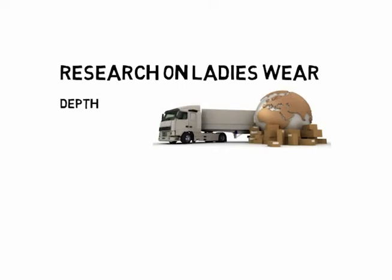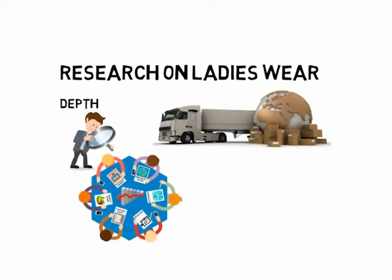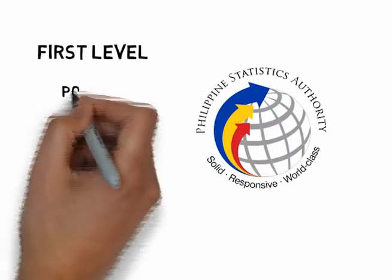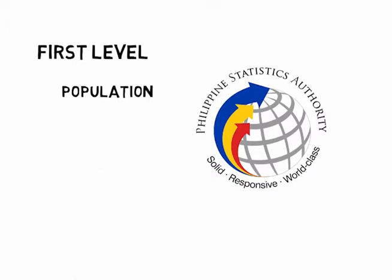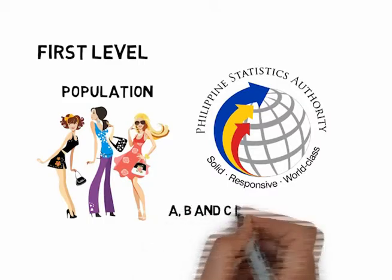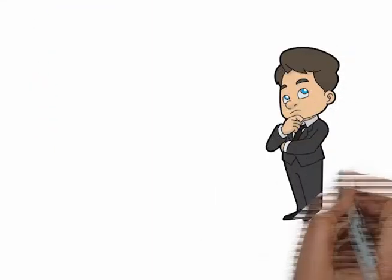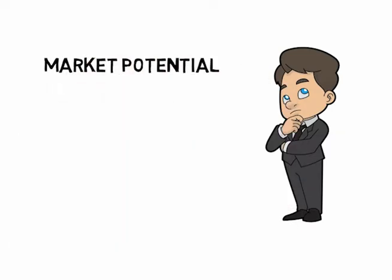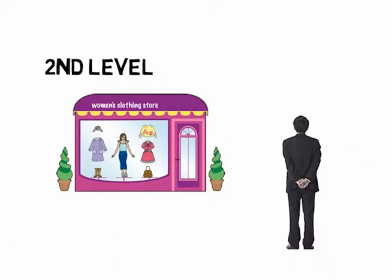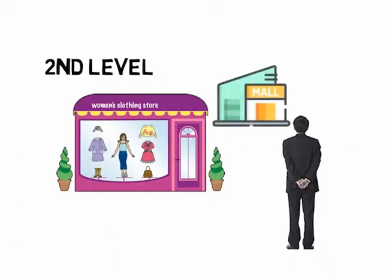To illustrate the levels of depth a market research project might pursue: an importer of trendy ladies wear wanted to know the market profile in Metro Manila in order to properly locate the store. At the first level, he obtained data from the National Statistics Office on the population of certain cities of Metro Manila, and isolated information on women between the ages of 15 and 36 in the ABC income classes. This gave him the overall market potential in Metro Manila for ladies wear. At the second level, he visited the major malls in Metro Manila where most competing ladies wear are sold.